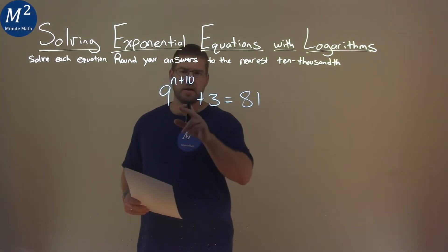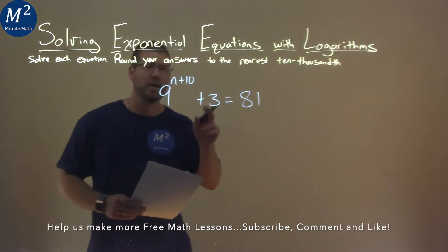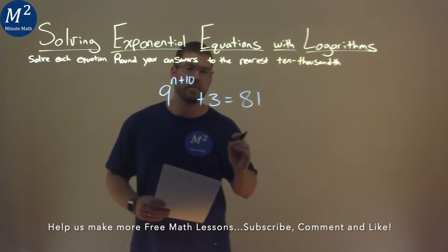We're given this problem right here: 9 to the n plus 10 power plus 3 equals 81, and we have to solve this equation.